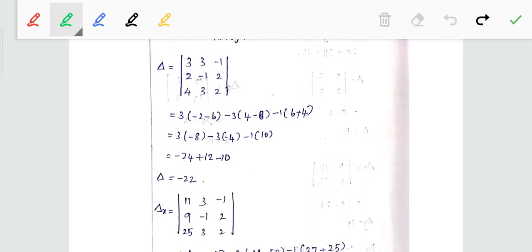So 3 into minus 8 is minus 24, 4 minus 8 minus 4, minus 4 into 3 is plus 2. Then 6 plus 4 is 10, 10 into minus 1 is minus 10.